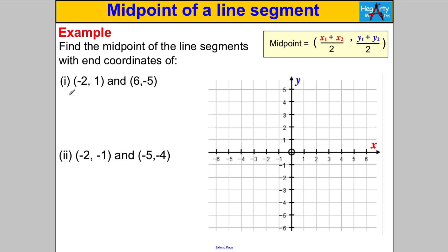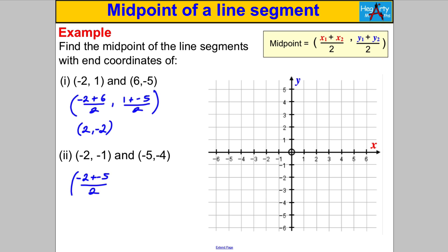Now find the midpoint of (−2, 1) and (6, −5). For the x-coordinate: −2 + 6 = 4, divided by 2 = 2. For the y-coordinate: 1 + (−5) = −4, divided by 2 = −2. Midpoint is (2, −2). What about (−2, −1) and (−5, −4)? x-coordinate: −2 + (−5) = −7, divided by 2 = −3.5. y-coordinate: −1 + (−4) = −5, divided by 2 = −2.5. Midpoint is (−3.5, −2.5).